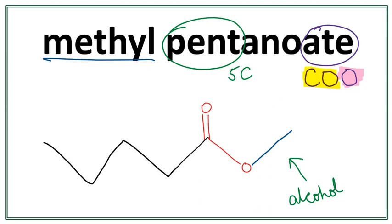Remember, the side chain, which is from the alcohol, always attaches with the oxygen. And the parent chain, which is from the carboxylic acid, always attaches with the carbon in the functional group.